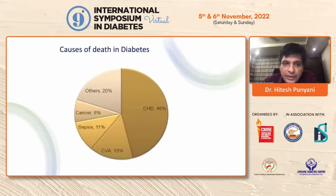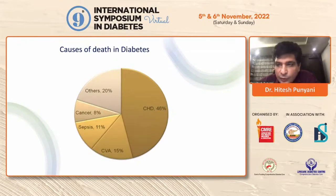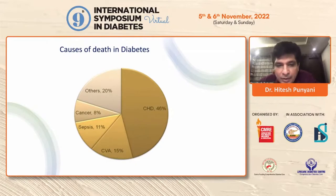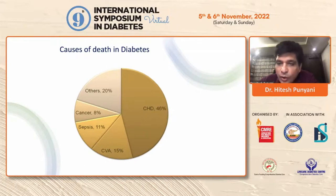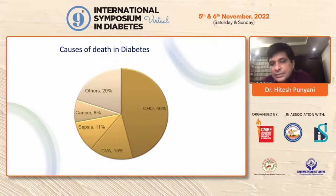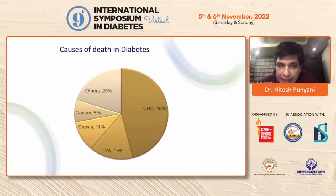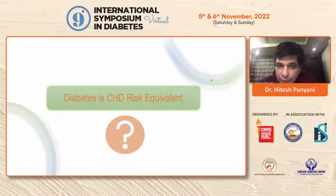If we talk particularly of morbidity and mortality in diabetes, we are all very well versed about the fact that more than 50% of the morbidity, and almost 60–65%, is attributed to coronary heart disease or cerebrovascular accidents. Vascular disease contributes to the major chunk of morbidity and mortality from this disease.